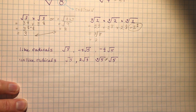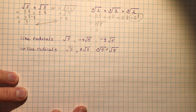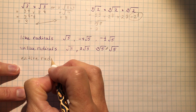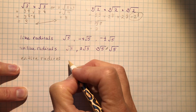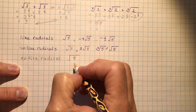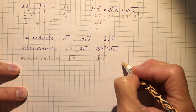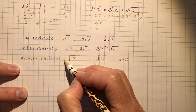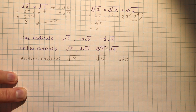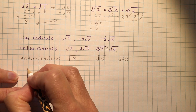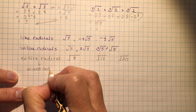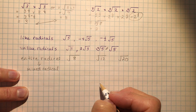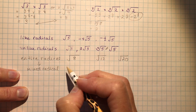Now we'll talk about converting entire radicals into mixed radicals. An entire radical looks like the square root of eight, the square root of 12, or the square root of 20 — everything is under the radical sign with no number in front. We can write these as mixed radicals, and this is a skill you need to know well because you're asked to do it frequently in order to combine and simplify radicals.